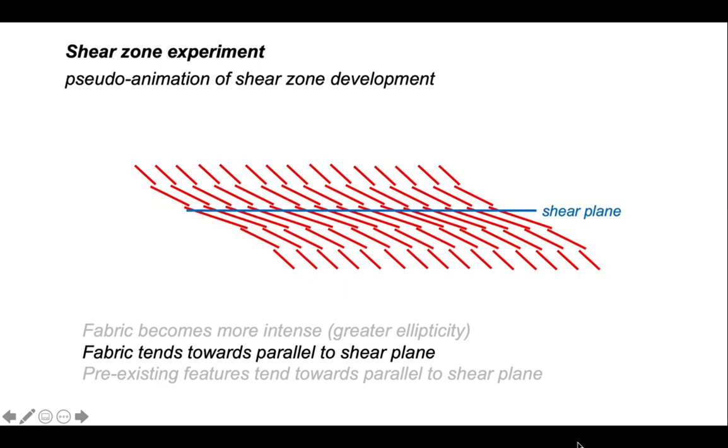And this draws out the idea that as we go from the margins into the centre of our shear zone, the fabric swings over and is becoming closer to the orientation of the shear plane.